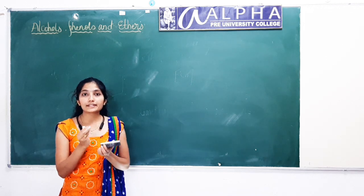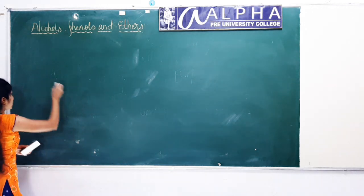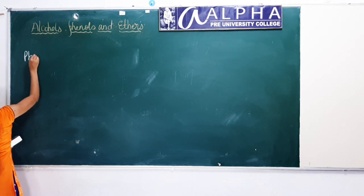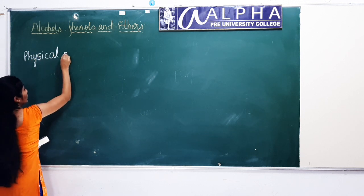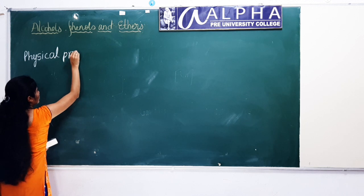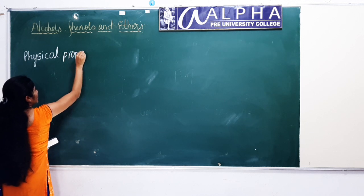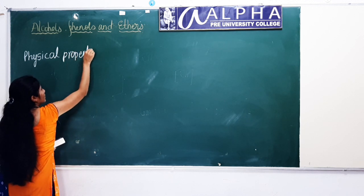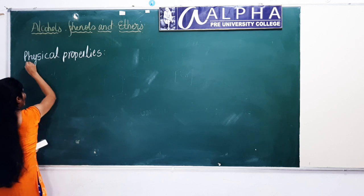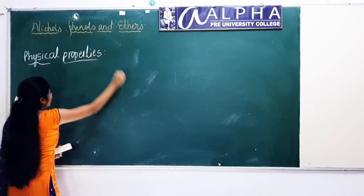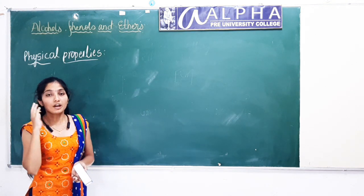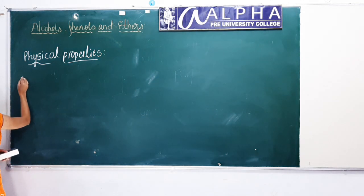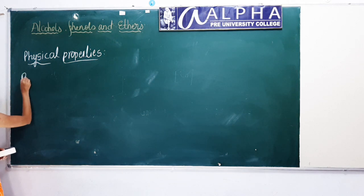This was about preparation of alcohols and phenols. Now let us start the physical properties of alcohols and phenols. Physical properties include physical state, solubility, boiling points, etc. Let us learn them one by one.